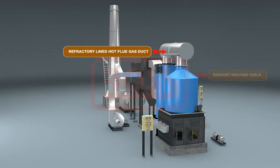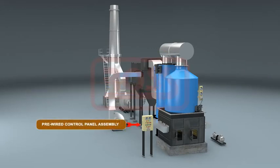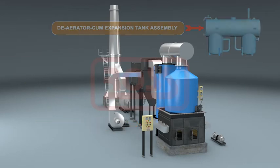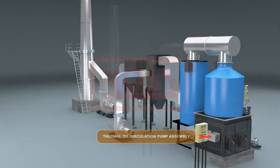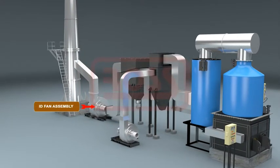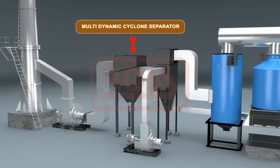hot flue gas duct between radiant and convective heating coils, convective heater coil assembly without a casing, pre-wired control panel assembly, deaerator cum expansion tank assembly, thermal oil circulation pump assembly, ID fan assembly, air preheater, multidynamic cyclone separator.